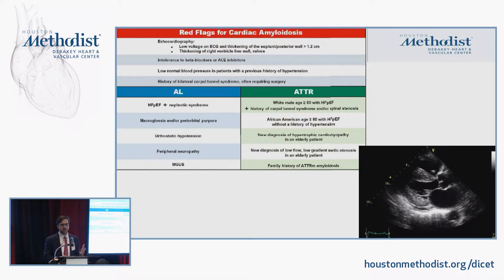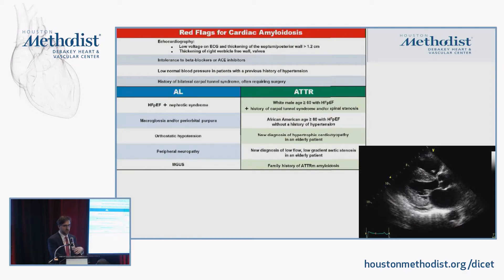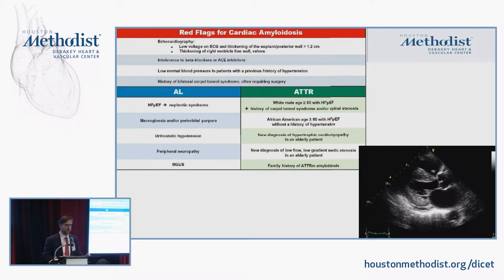You'll see at least one case of cardiac amyloidosis in your fellowship. Key echo features include biventricular hypertrophy, biatrial enlargement, small to medium pericardial effusions, pleural effusions, and advanced diastology features. If you see thick walls but the EKG shows normal or low voltage — rather than the LVH you'd expect — that's a major red flag for amyloid. Intolerance to beta-blockers and ACE inhibitors, orthostatic hypotension, and a history of bilateral carpal tunnel syndrome are also red flags.